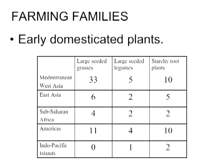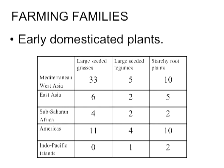One of the reasons given for cultural differences in the development of agriculture in different parts of the world is simply that there is not an equal distribution of members of these three categories. In the Mediterranean and West Asia region, there's a very large number of large seeded grasses, a large number of starchy root plants, and the largest number of large seeded legumes. By the time we get to the Indo-Pacific region, there are no large seeded grasses, only one large seeded legume — a tree that must grow quite large before producing seeds — and only two native starchy root crops.